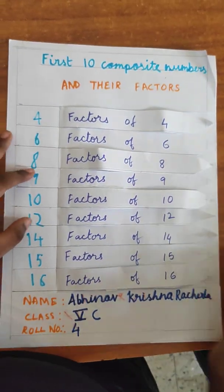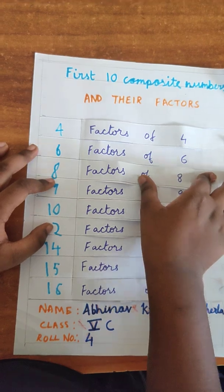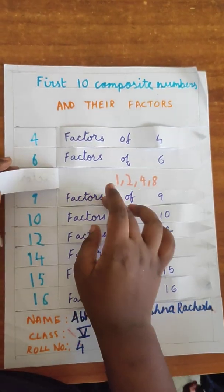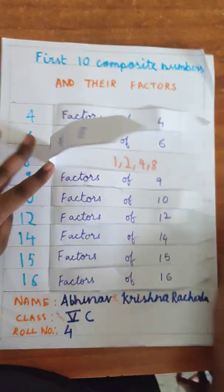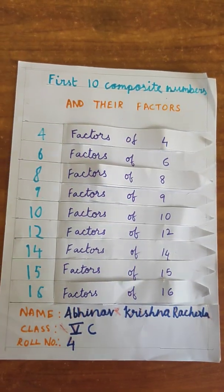Select another one. Factors of 8 are 1, 2, 4, and 8. Did you like the activities?